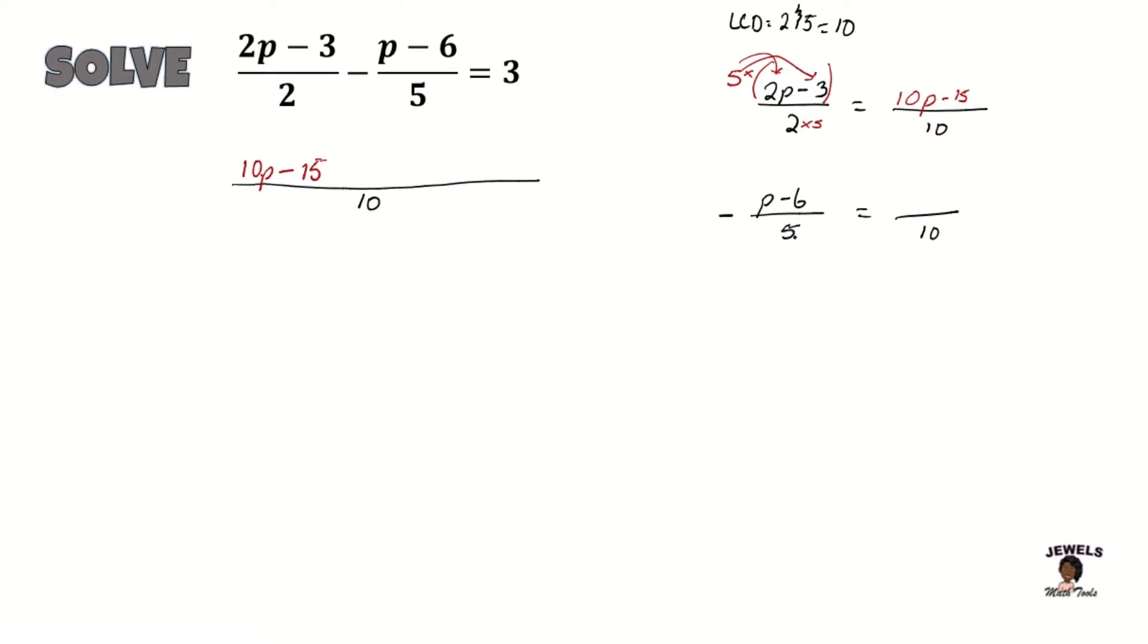Okay, so we're looking for the number that when we multiply it to 5, it's going to equal 10. And we know that 2 times 5 is equal to 10, which means that we're multiplying everything in our numerator by 2 as well. And we're distributing this minus sign. So we have negative 2 times p will equal negative 2p, and negative 2 times negative 6 will equal a positive 12. So we now have negative 2p plus 12.